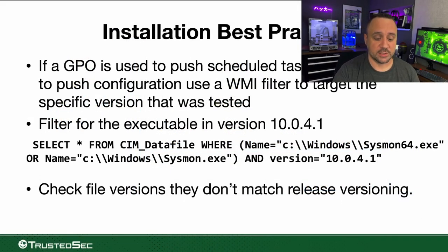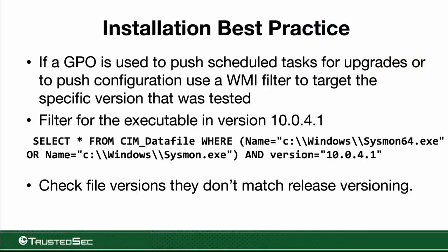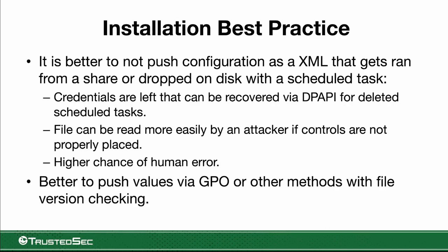Another option is to use WMI filters on our GPOs so that configuration only applies to the version of Sysmon we want on the target machine. One important caveat: if you're using alternate credentials, those credentials are stored under the System context on the machine via DPAPI. If you remove a run-once scheduled task using alternate credentials, those credentials are not removed from the System store — they're always going to be there, and an attacker can find and reuse them for lateral movement or other actions.